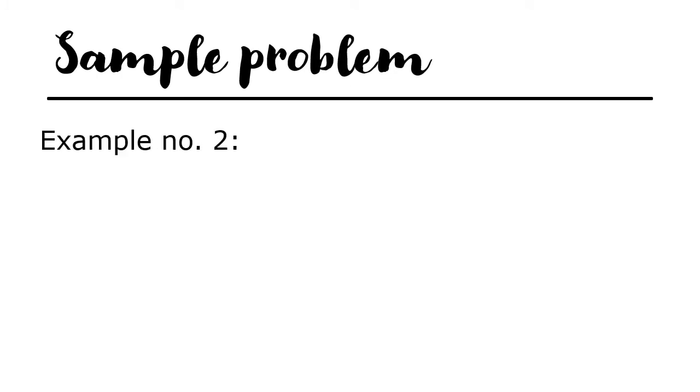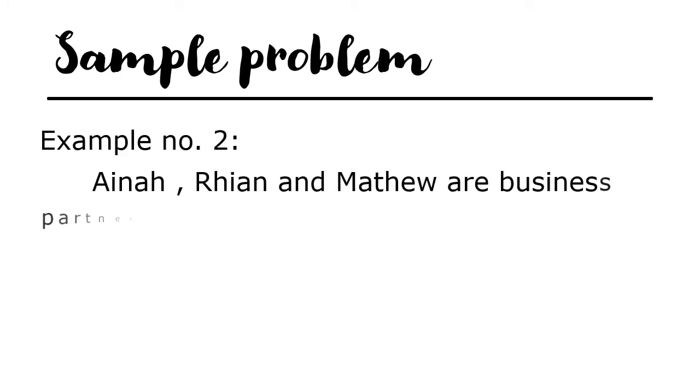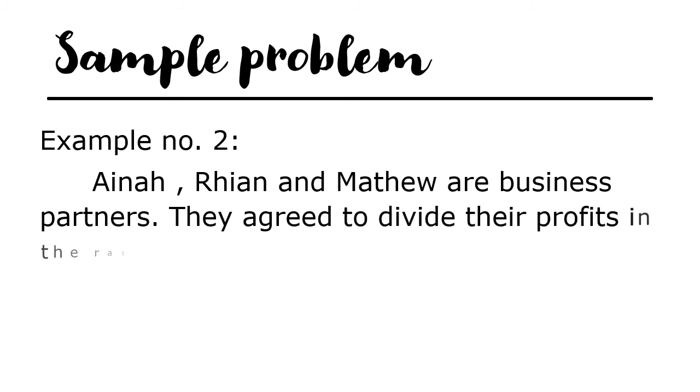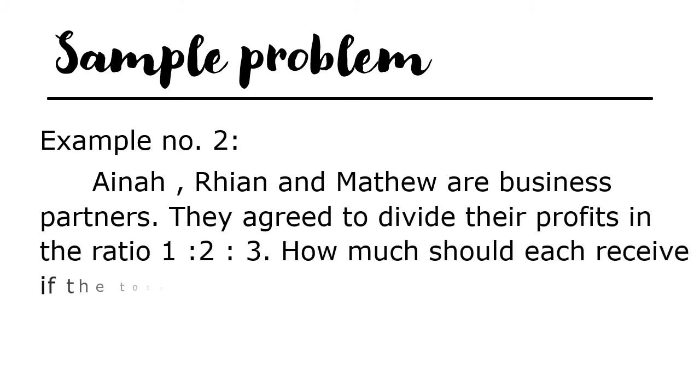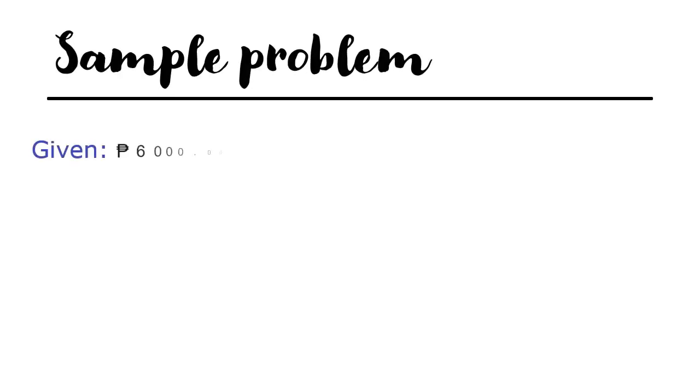Example number 2: Aina, Rian, and Matthew are business partners. They agreed to divide their profits in the ratio 1 to 2 to 3. How much should each receive if the total profit is 6,000? Given: 6,000 pesos into parts 1 to 2 to 3.